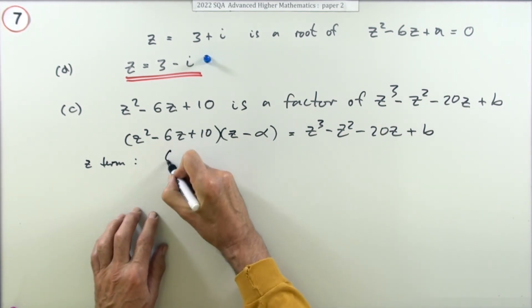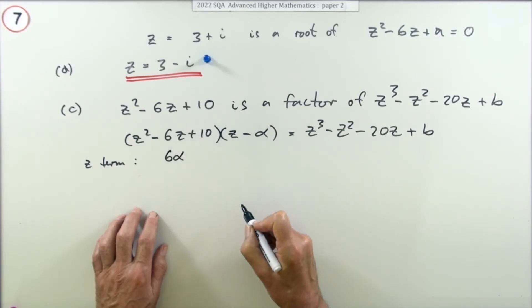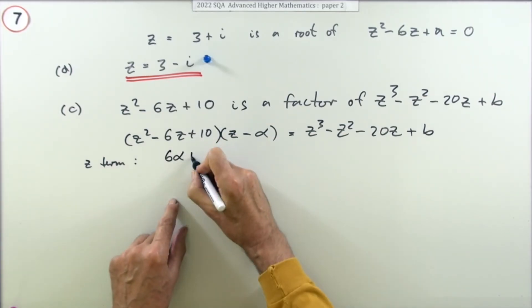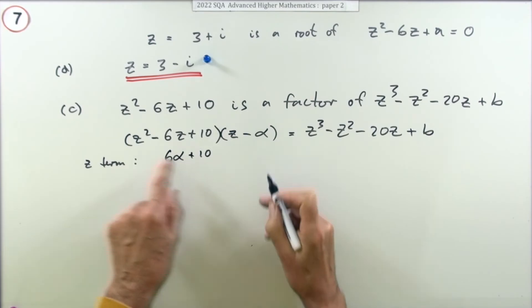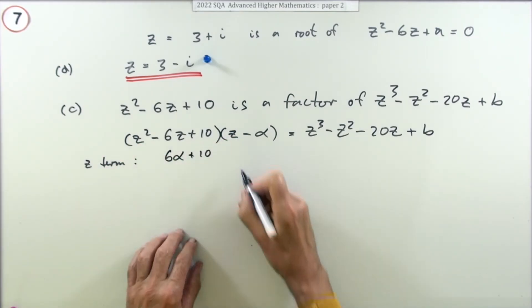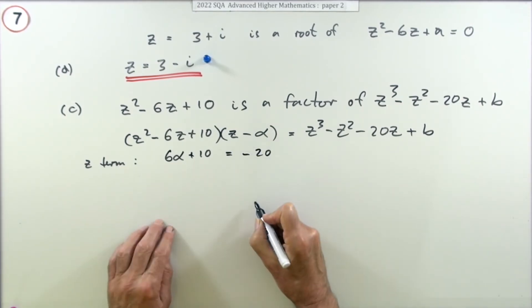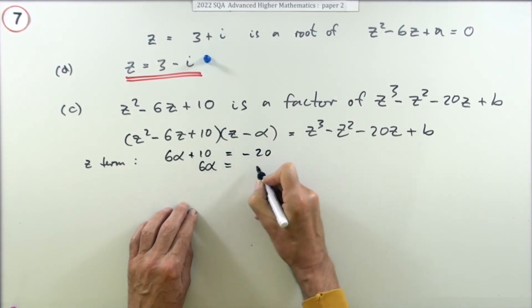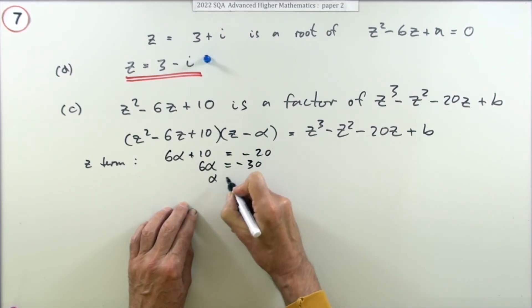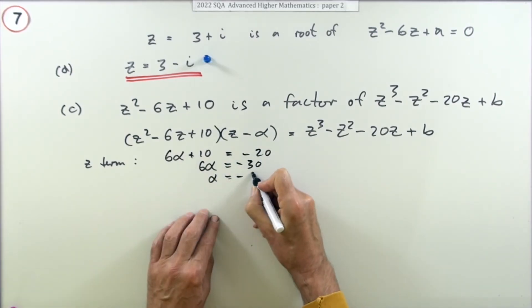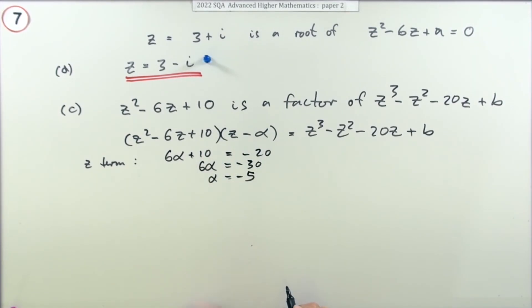So you've got 6 alpha z and the 10z. That would be the coefficient of the z term that came out of this. That should equal the z term in this, which is negative 20. So that means 6 alpha should be negative 30, so alpha should be, divided by 6, negative 5. It's only the one mark then.